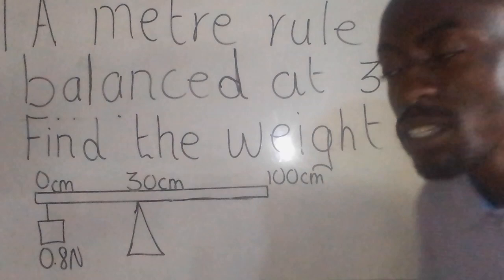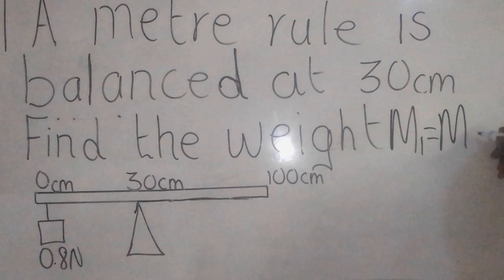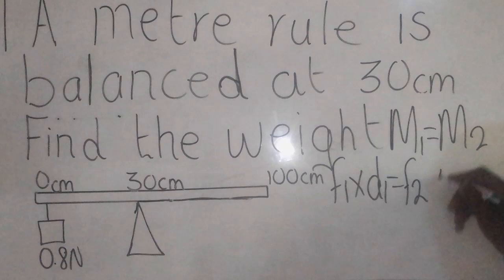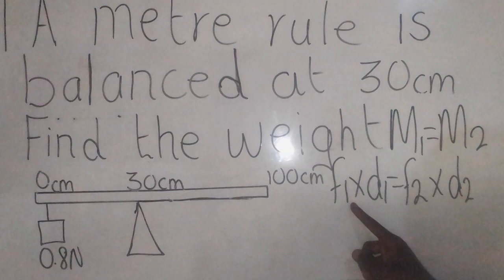When I say clockwise equal to anticlockwise, it simply means moment 1 equals moment 2. Moment is force times distance, so it's going to be force 1 times distance 1 equals force 2 times distance 2.